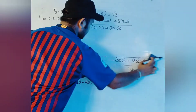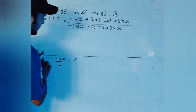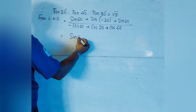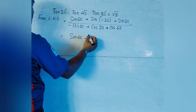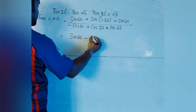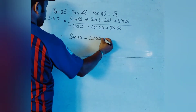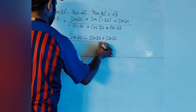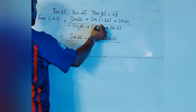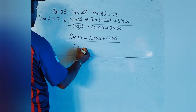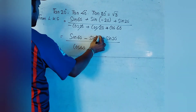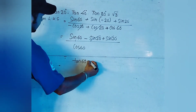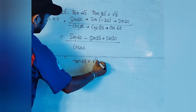Simplifying: sin60° + sin(−20°) + sin20° in the numerator — sin(−20°) = −sin20°, so −sin20° + sin20° cancels. In the denominator, −cos20° + cos20° cancels, leaving cos60°. We obtain sin60° / cos60° = tan60° = √3. This completes the proof.